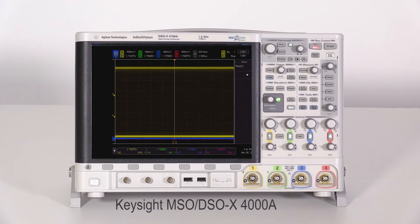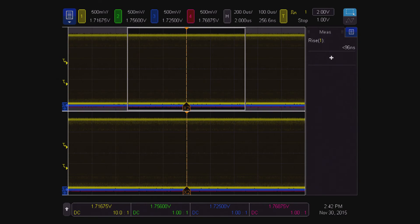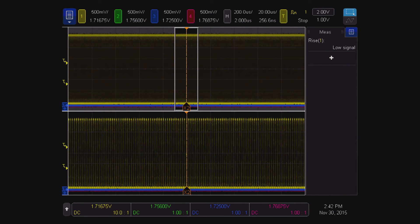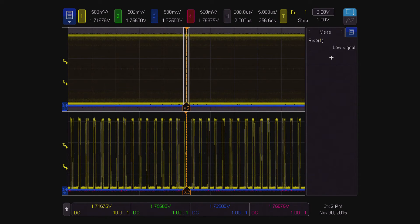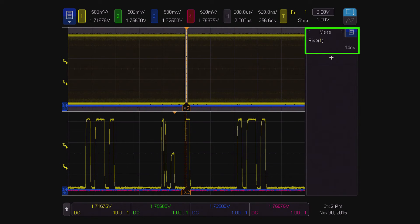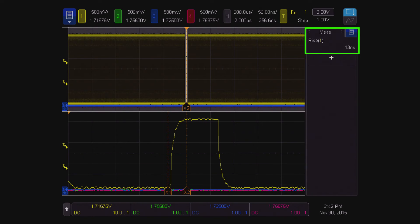This isn't the case on the Keysight X-4000A. The measurement starts at a result of less than 96 nanoseconds. And as we start to zoom in on the signal, the rise time measurement changes. It goes to low signal, then to 14 nanoseconds, changes to 11 nanoseconds, and back to 13 nanoseconds, and finally to 13.8 nanoseconds.